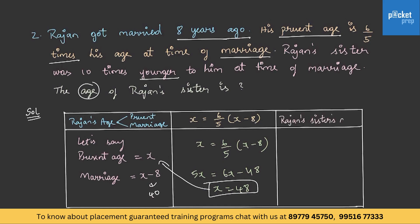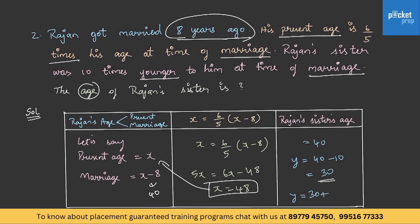Now, what is Rajan's sister's age? Rajan's sister was 10 years younger to him at time of his marriage. Rajan's age at marriage was 40, so her age at that time was 40 minus 10, that is 30. But that age was 8 years ago. So her present age will be 30 plus 8, that is 38. This is Rajan's sister's present age.